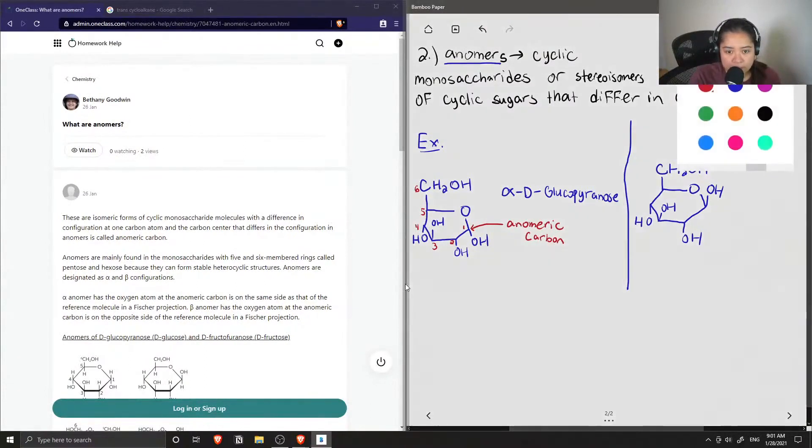And again, we can label our anomeric carbon. And the name of this anomer is beta-D-glucopyranose.